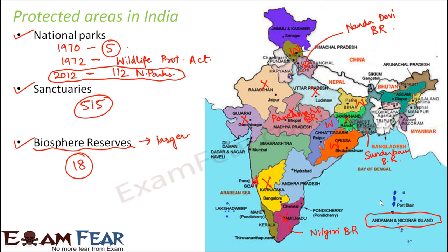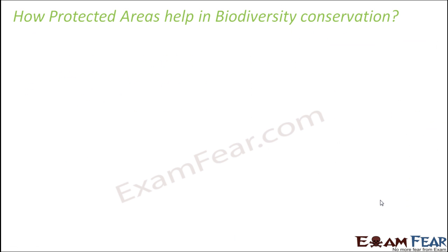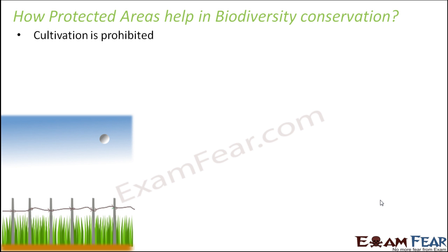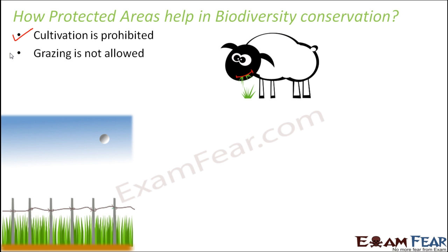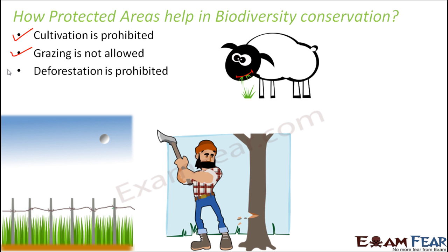Now let us see how these protected areas help in conservation of biodiversity. In each of these protected areas — whether it is national park, wildlife sanctuary, or biosphere reserve — cultivation is strictly prohibited, so you are not allowed to grow crops. Agriculture is not allowed in these areas. Grazing is not allowed — you cannot allow your animals to come in and feed on the grasses there. Deforestation is also prohibited; you strictly cannot cut down a single tree within this area, so that the greenery and the environment in which the animals live are maintained.